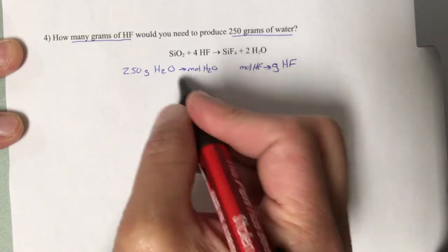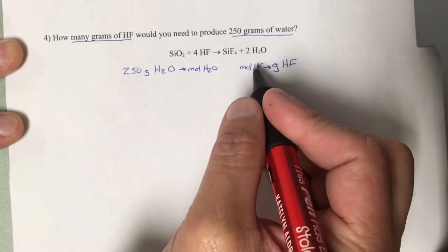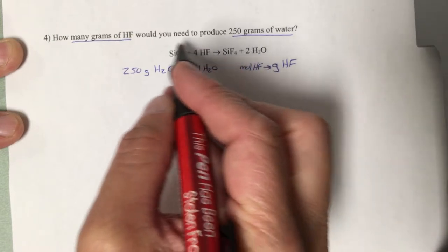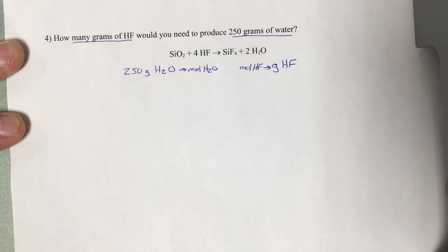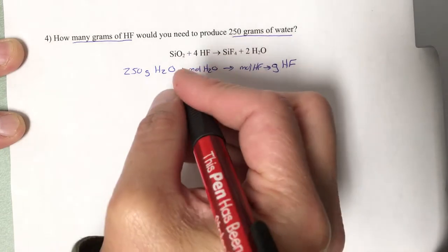Then I look at what I've got here in the middle: moles of water, moles of hydrogen fluoride. Do I have a balanced equation that would allow me to go back and forth between the two? By golly, I do. So I can make that conversion. I've got a three-step problem here.